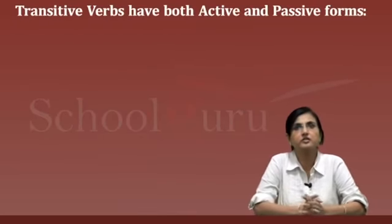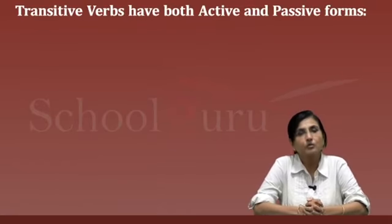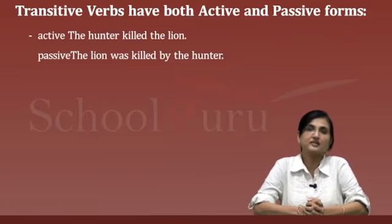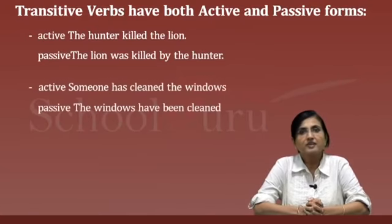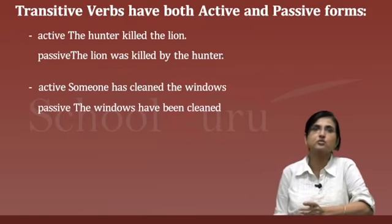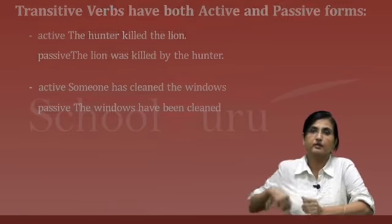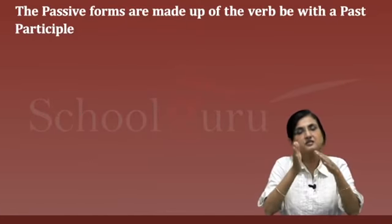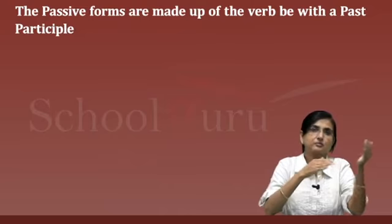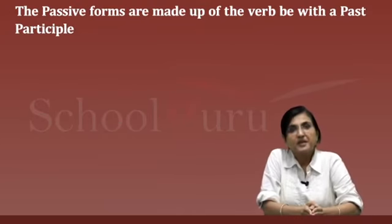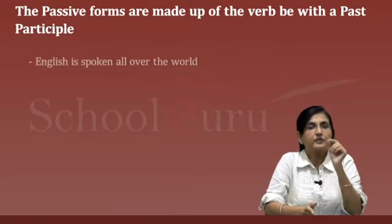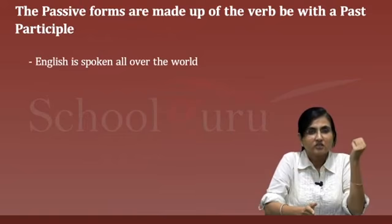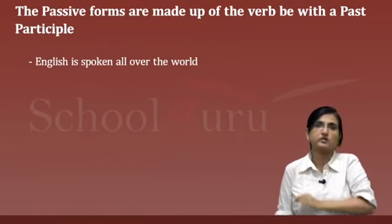Transitive verbs have both active and passive forms. Active: 'The hunter killed the lion.' Passive: 'The lion was killed by the hunter.' Active: 'Someone has cleaned the windows.' Passive: 'The windows have been cleaned.' The passive forms are made up of the verb 'be' and a past participle. For example: 'English is spoken all over the world.'